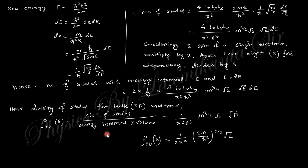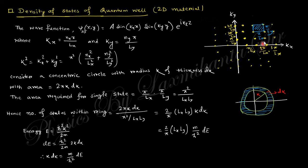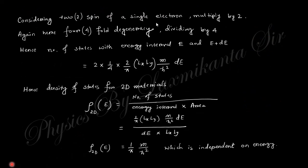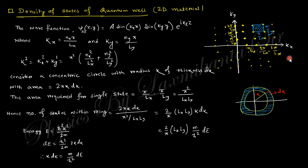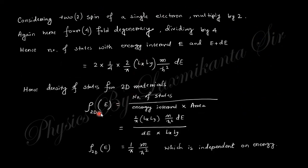For 2D material, one k-dimension is absent — you use a circular ring of area 2πk dk. The area of a single state is (π/Lx)(π/Ly) = π²/LxLy. Dividing the ring area by the single-state area gives the number of states. Multiply by two for spin and divide by four for fourfold degeneracy in kx and ky. Converting k to energy, the density of states for a 2D material turns out to be independent of energy — a constant.